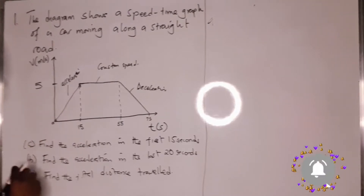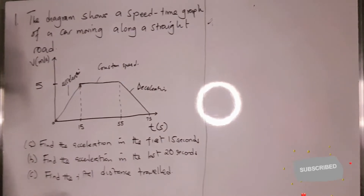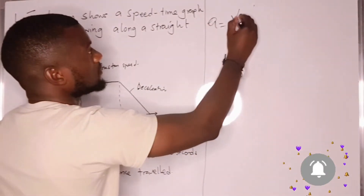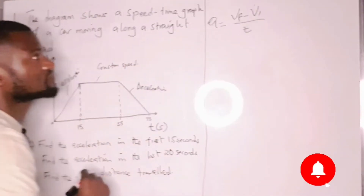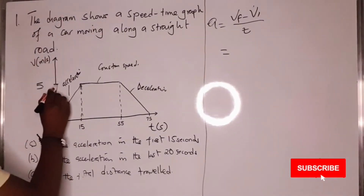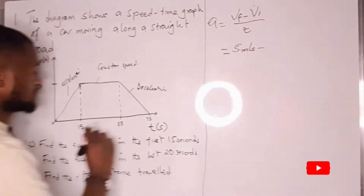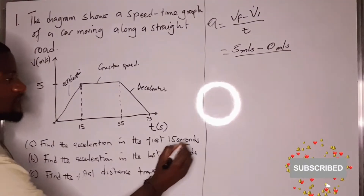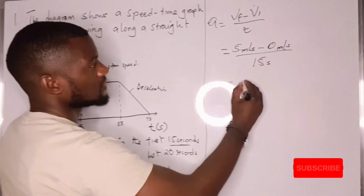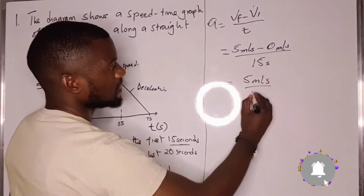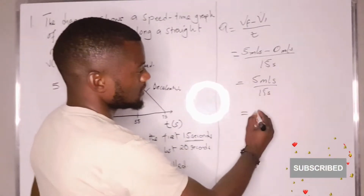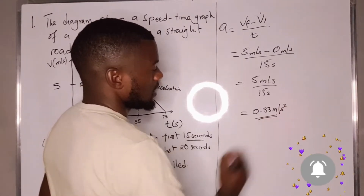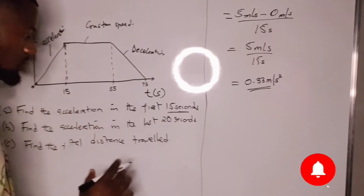For part A, we find the acceleration in the first 15 seconds. To calculate acceleration, you need the final velocity, the initial velocity, and the time. Our final velocity is 5 meters per second, our initial velocity is 0 meters per second, and the time is 15 seconds. So acceleration = 5 divided by 15, giving us 0.33 meters per second squared.